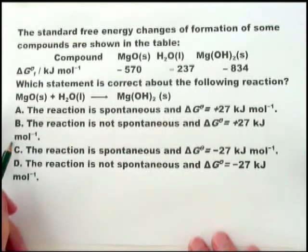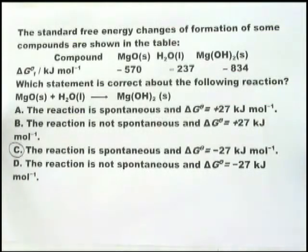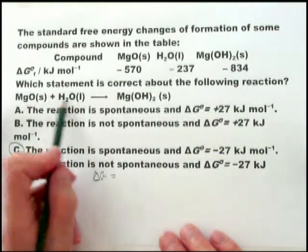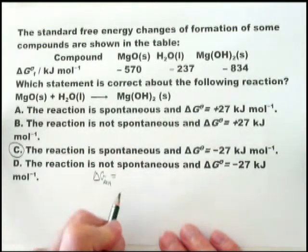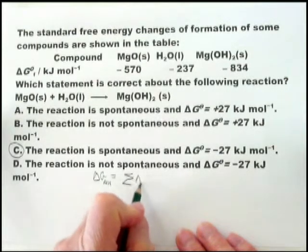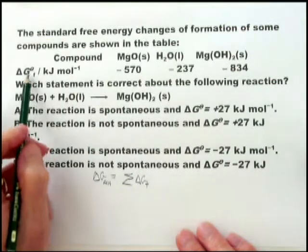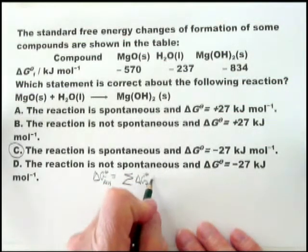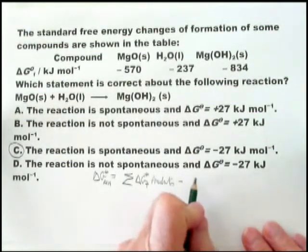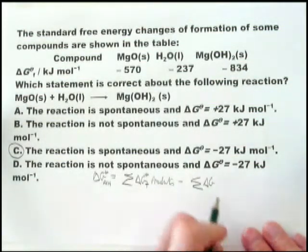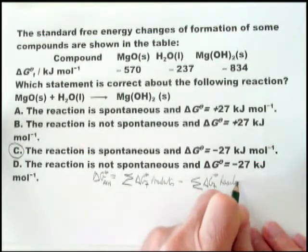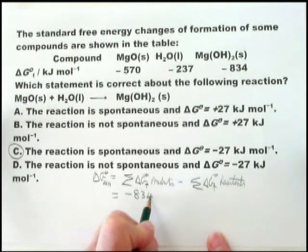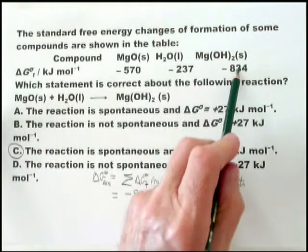Without doing the calculation, you know that the answer is C. Now, those of you who do do the calculation, let's show you that the calculation is delta G equals, that's the delta G for this reaction, equals the sum of the delta G formation for the products minus the sum of the delta G formation for the reactants. And then when you put the data in, that equals minus 834. The product is magnesium hydroxide, and the number is minus 834.